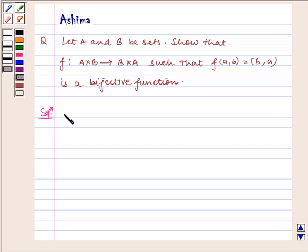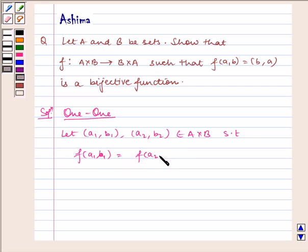Now let us write the solution. First, let us check for one-to-one. Let (a₁,b₁), (a₂,b₂) ∈ A×B such that f(a₁,b₁) = f(a₂,b₂). Then (b₁,a₁) = (b₂,a₂), which implies b₁ = b₂ and a₁ = a₂.